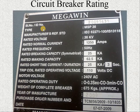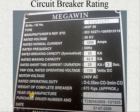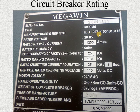Circuit breaker rating. Here is a picture taken from a circuit breaker nameplate. The nameplate consists of different rated values of voltage, current and frequency. The type of circuit breaker is MSP 36, referencing standard IEC 62271-100 or IS 13118. The rated voltage is 36 kV and the normal current is 1250 A.